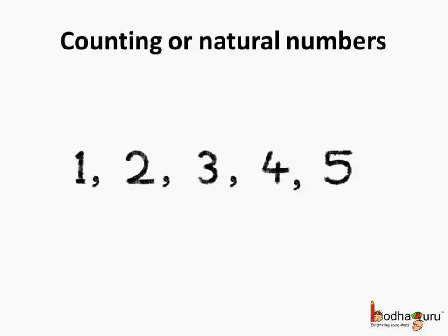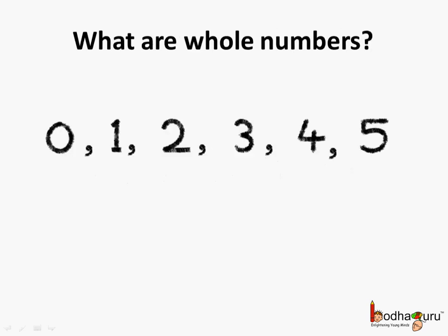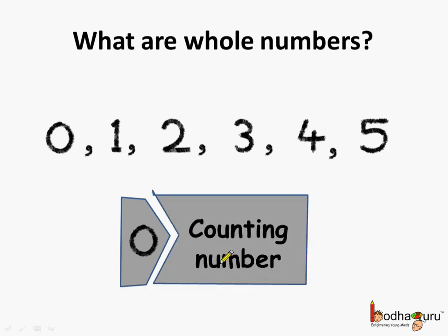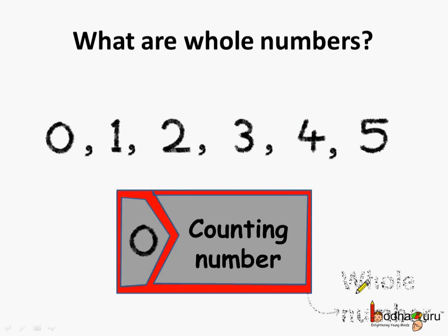We already know what are counting numbers or the natural numbers. These are 1, 2, 3, 4 and so on. Whole numbers is a collection of natural numbers and 0. So, 0 and the counting numbers together become whole numbers.